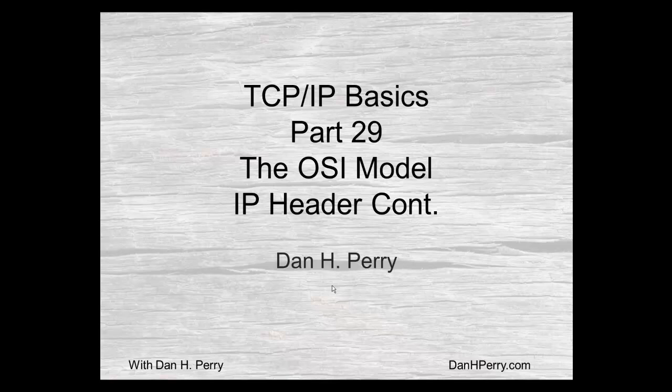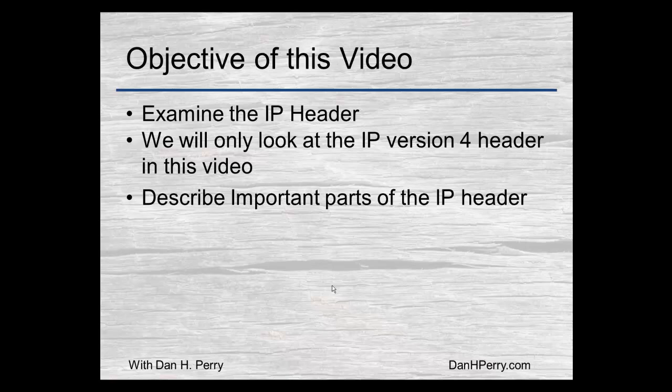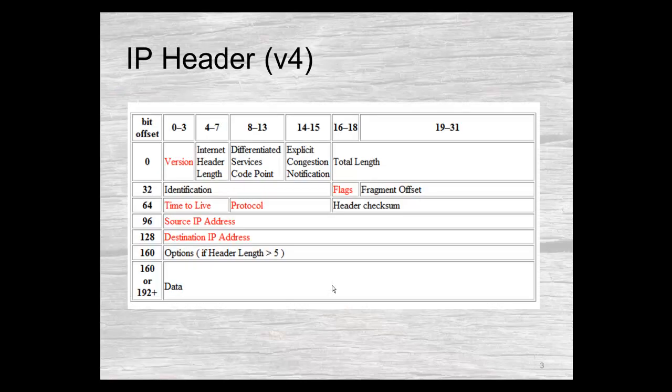Dan Perry here with part 29 of our TCP/IP basics. We're continuing with the OSI model and this is our second part on the IP header. We're examining the IP header again, only version 4 for the TCP/IP header. Here are all the fields and what we're going to be starting with today is the identification field.